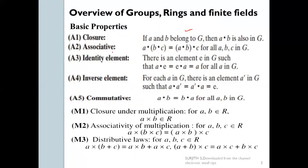The second is the associative property. The associative property states that A dot (B dot C) is equal to (A dot B) dot C. That is the associative property.